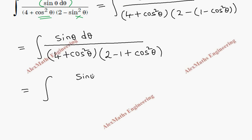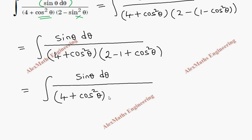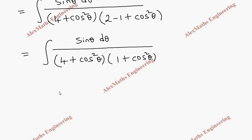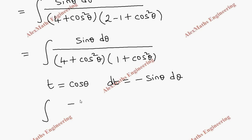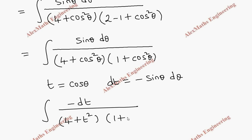This simplifies to: sin θ dθ divided by (4 + cos² θ) times (1 + cos² θ). Now we take the substitution t = cos θ, so dt = minus sin θ dθ. Replacing, we get minus dt in the numerator and the denominator becomes (4 + t²)(1 + t²).